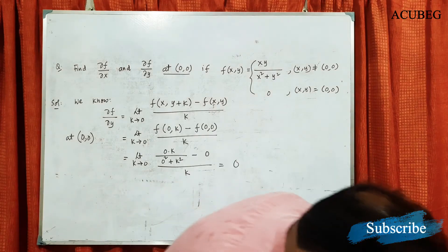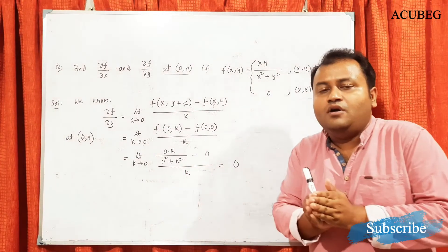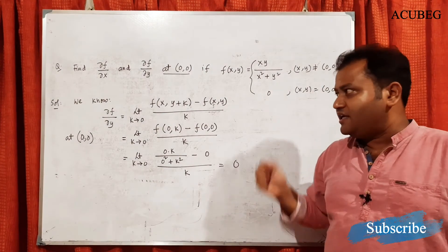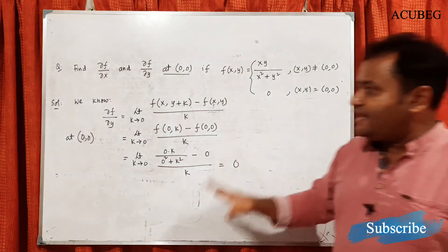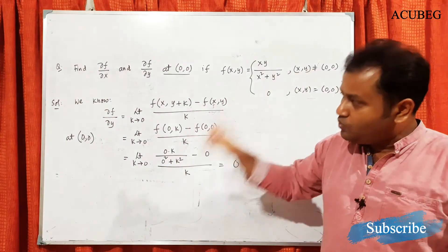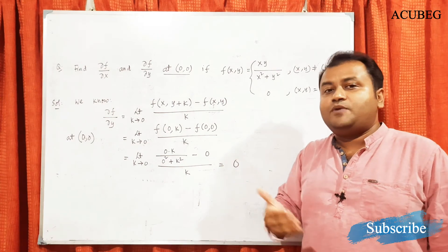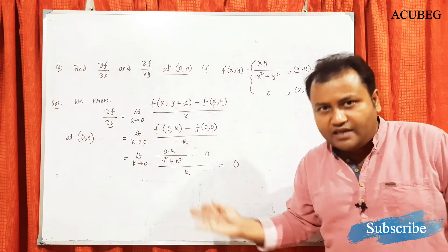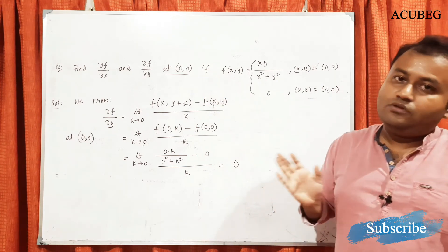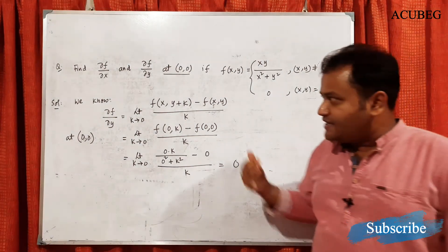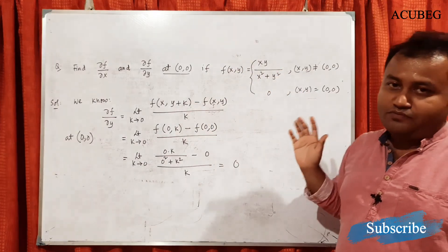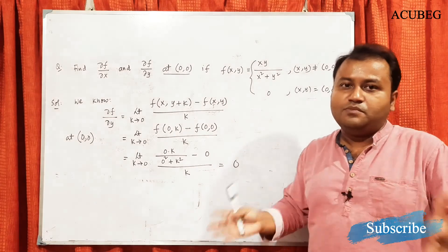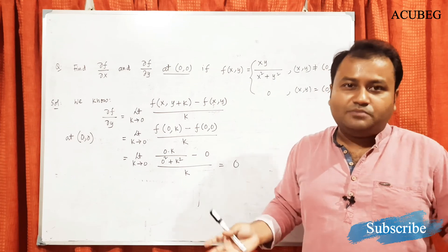So that is all for this session. We introduced the function of several variables for two variables x and y, and we saw what happens to the definition of the derivative in the multivariable case. In single variable there is one definition with respect to one variable; here we get multiple partial derivatives with respect to multiple variables. The fundamental concept is the same: when differentiating with respect to one variable, all other variables are treated as constants. Thank you very much, please subscribe the channel and share it.